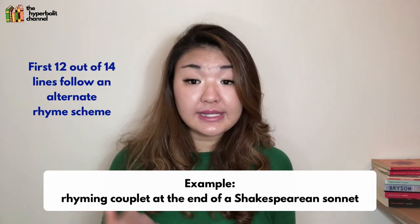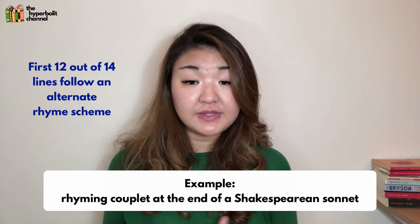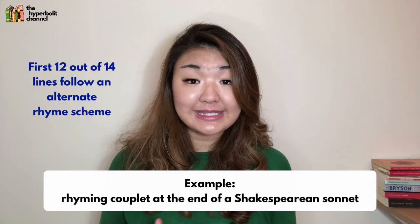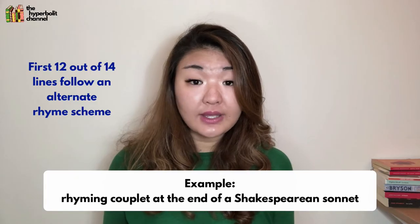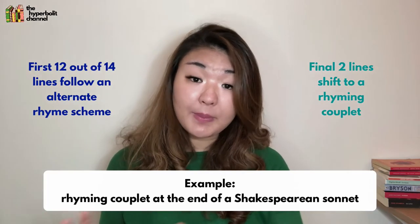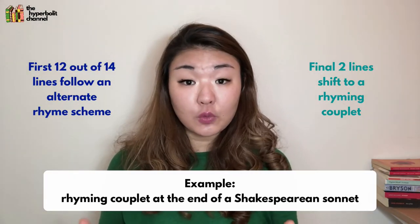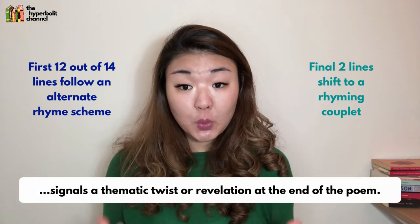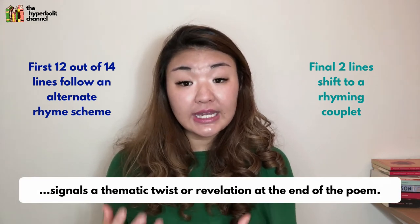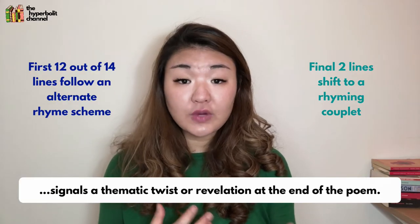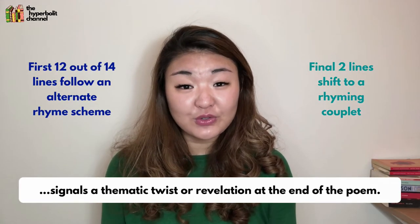For the first 12 lines of the 14 lines of a Shakespearean sonnet, they follow an alternate rhyme scheme of ABAB CDCD EFEF. But in the final two lines, we notice that the pattern switches to a pair of end rhyme, or what we call a rhyming couplet. This structural shift, of course, always signals a thematic twist or revelation in the sonnet, which shows that changes in technique or form are often critical to helping us unveil new avenues of meaning in poetry.